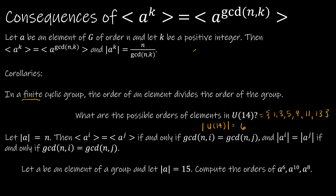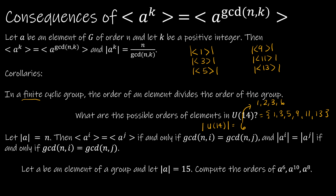If I were to find the subgroup generated by 1, 3, 5, 9, 11, and 13, what would be their orders? The order of an element has to divide the order of the group. So what divides 6? Just 1, 2, 3, and 6. If you found each of these subgroups, you would find that 1 has an order of 1, which makes perfect sense. 3 has an order of 6, meaning 3 generates the entire group. 5 has an order of 6, so 5 also generates the entire group. 9 has an order of 3, 11 has an order of 3, and 13 has an order of 2. So we can see that each of those orders is 1, 2, 3, or 6.